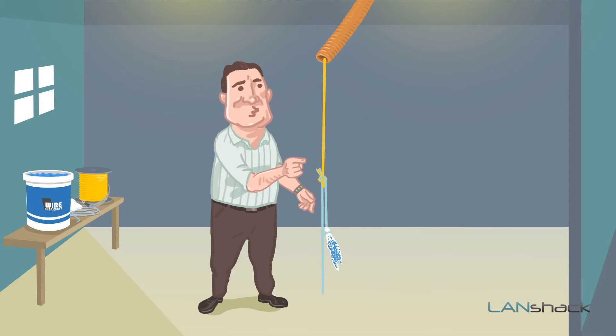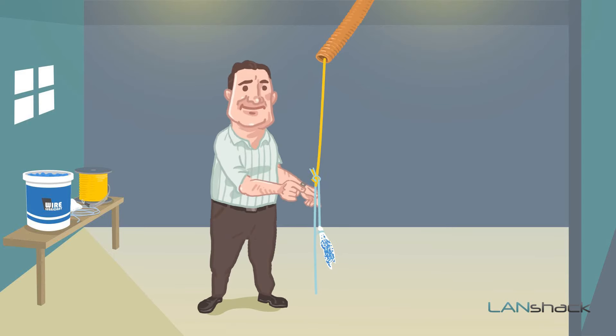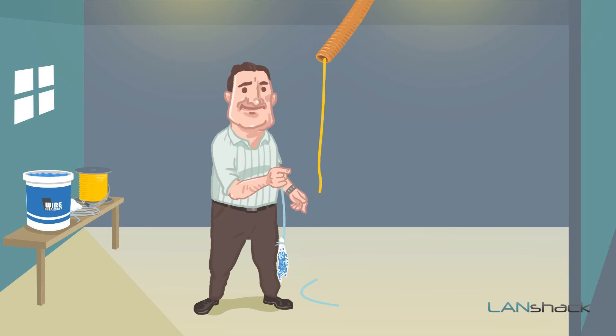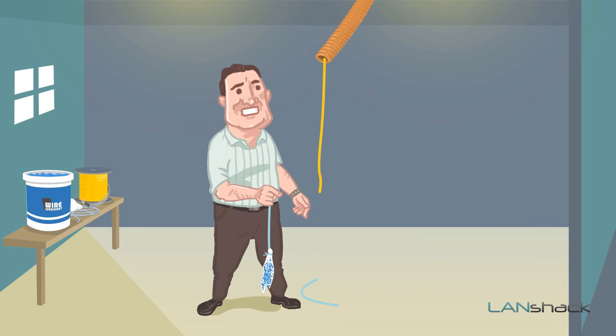Now we have the conduit lubricated in both directions. We can stop this process at this point, but it's good to do this process two to three times, especially if you have a very long conduit and anticipate a more difficult pull.